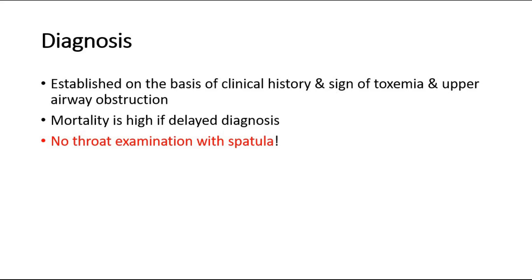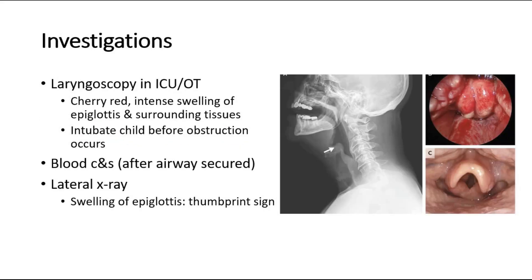For investigations, notify the senior anaesthetist, paediatrician, and also the ear, nose, and throat surgeon. We perform laryngoscopy to diagnose the condition in an ICU or OT setting, where we will be able to see a cherry-red, intensely swollen epiglottis and surrounding tissues. We intubate the child before obstruction occurs. Other blood investigations such as blood culture and sensitivity are only done after the airway has been secured.